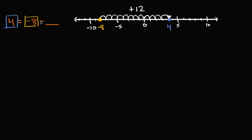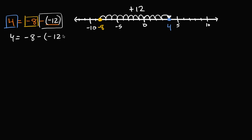But how do you do that? Because they're saying negative eight minus something should be equal to four. Well, whatever you have over here, you want this to end up being equivalent to plus twelve. You could subtract a negative — if you subtracted negative twelve, this would be equivalent to adding twelve. So four is equal to negative eight minus negative twelve, which is the same thing as negative eight plus positive twelve, or four is equal to negative eight plus twelve.